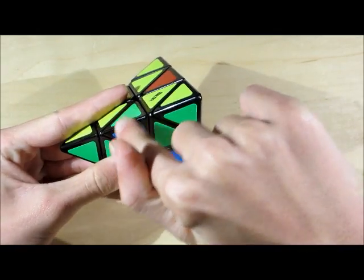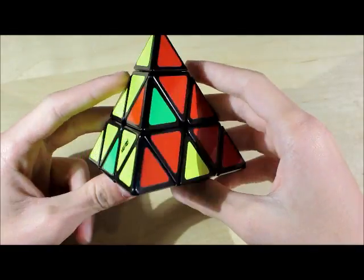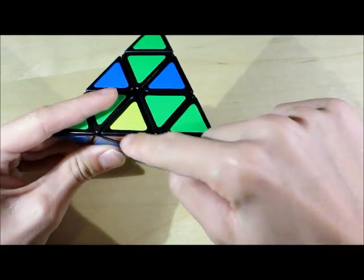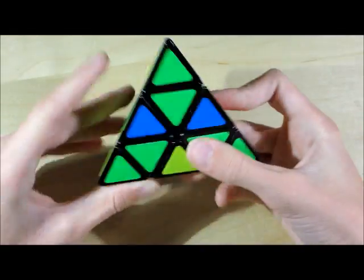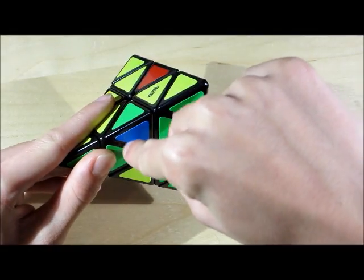Alright. The next step is we're going to be solving the edges. Now we're not going to be worrying about orientation just yet. We'll do that after. Now to solve the edges, we're going to want to solve two edges on one face first. To solve an edge, you want to place it in the left slot like this, right over it.